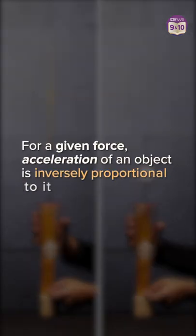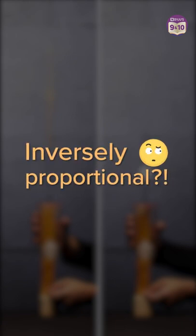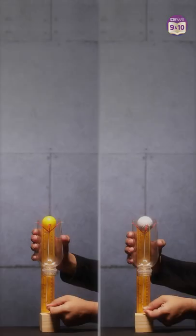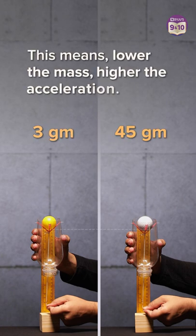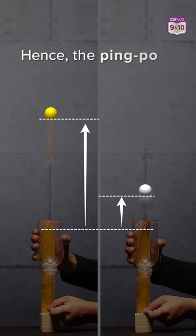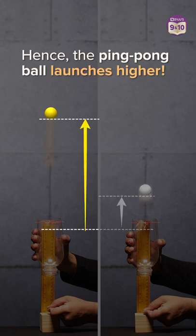For a given force, acceleration of an object is inversely proportional to its mass. But what does inversely proportional actually mean? It means if you have two balls with different masses, lower the mass, higher is going to be the acceleration. And that's why the ping pong ball launches higher.